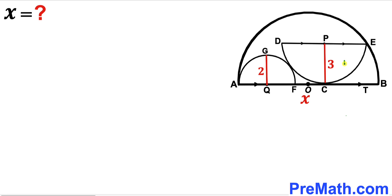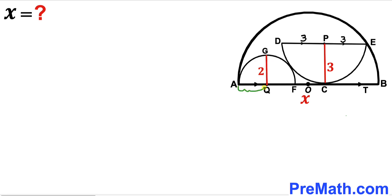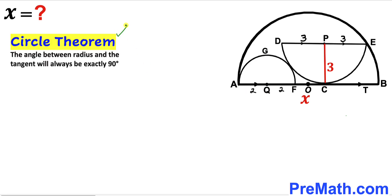Let's focus on the medium semicircle. Its radius is 3 units, so radius DP is 3 and radius PE is 3 units as well. The radius of the smallest semicircle is 2 units, so radius AQ is 2 units. Recalling the circle theorem: the angle between the radius and the tangent line is always exactly 90 degrees. So this angle is 90 degrees since this is our radius and this is our tangent line.